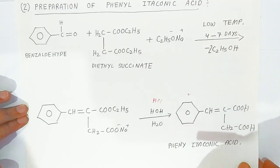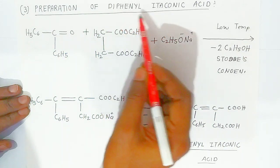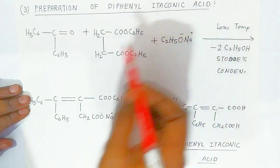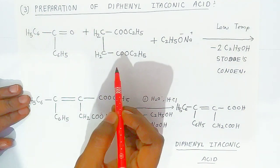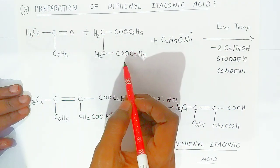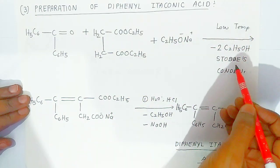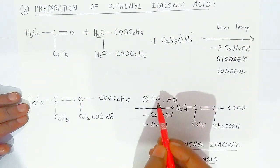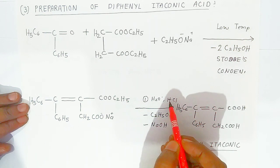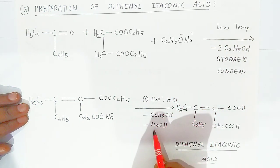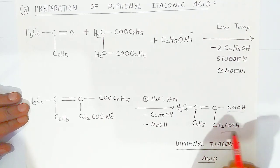Phenyl itaconic acid is a very important compound used in drug formation. The third application is preparation of diphenyl itaconic acid. Benzophenone, which has benzene groups on both sides, reacts with diethyl succinate in presence of sodium ethoxide at low temperature. Stobbe condensation takes place, and upon hydrolysis with acidic water, diphenyl itaconic acid is obtained.